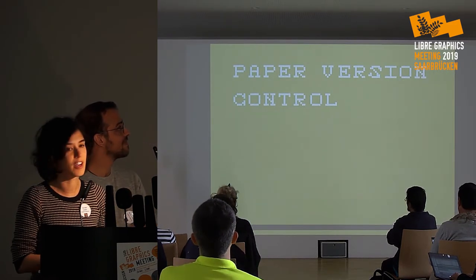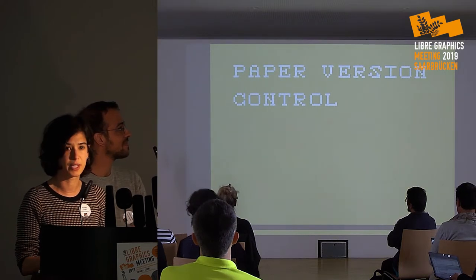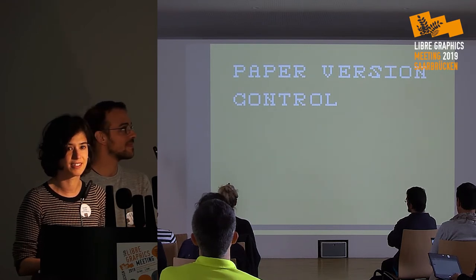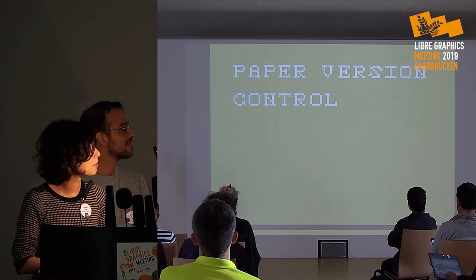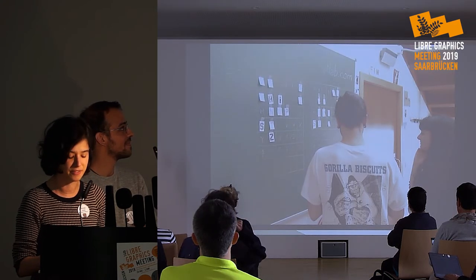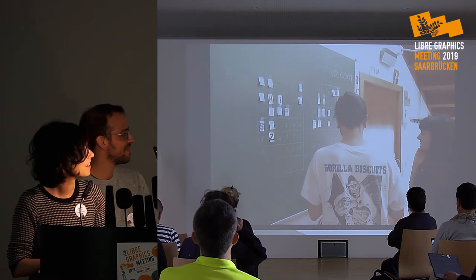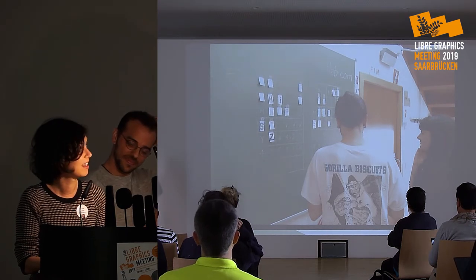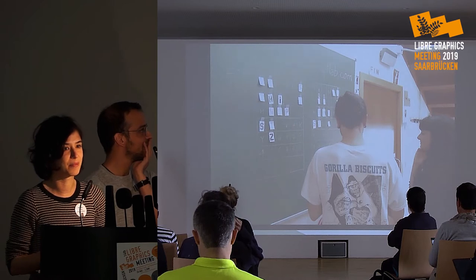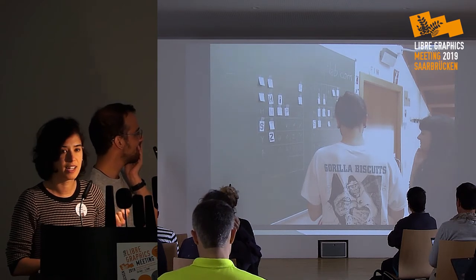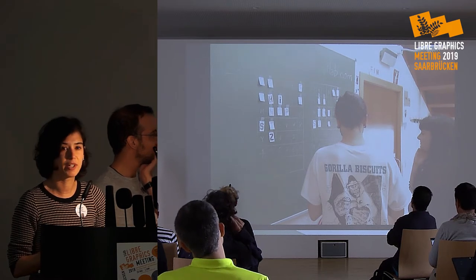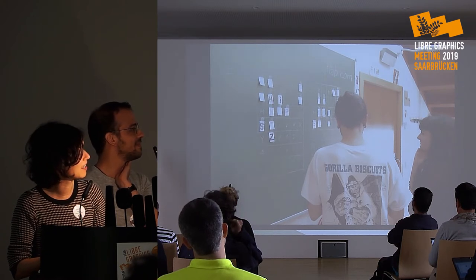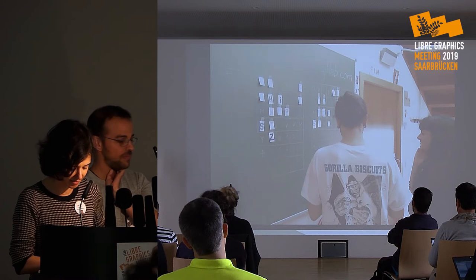Paper was also our way to deal with version control. When you have a lot of people working together on the same project you need some kind of system to organize the collaboration. With paper we were able to create an analog version control, and it was also a good way to introduce people to things like Git — a soft way to let them know how to pick a letter, avoid duplicate work, and track who is doing what and what's already done.